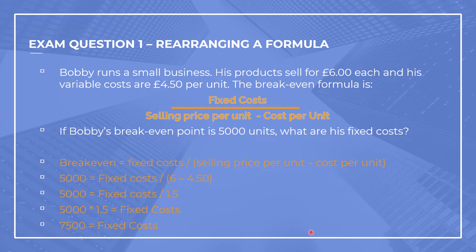We're going to look at an exam question now. First of all, we need to read the question and then try to rearrange the formula. The question says: Bobby runs a small business. His products sell for £6 each and his variable costs are £4.50 per unit. The breakeven formula is fixed costs divided by selling price per unit minus cost per unit. If the breakeven point is 5,000 units, what are his fixed costs? So it's giving us the answer to this formula and we need to rearrange it.